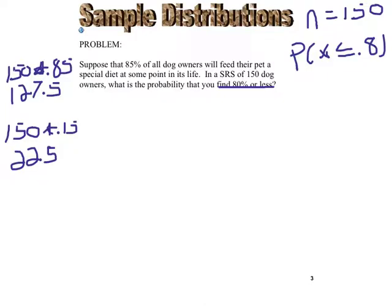Let's go back to that first slide. We said if we can use our normal distribution, the mean of p-hat is 0.85. The standard deviation of p-hat, we have to calculate. That's the square root of 0.85 times 0.15 divided by 150.